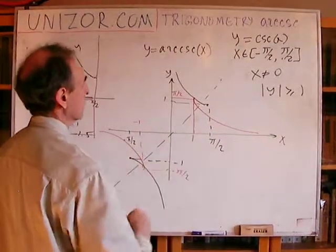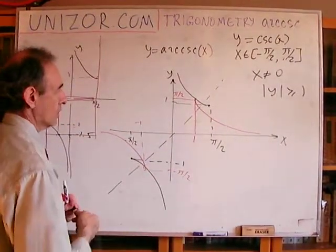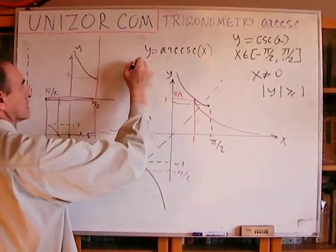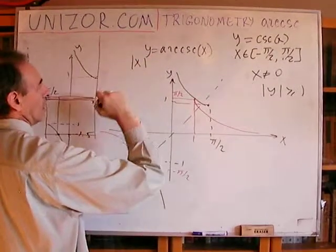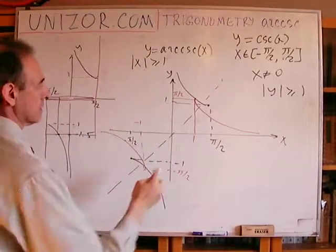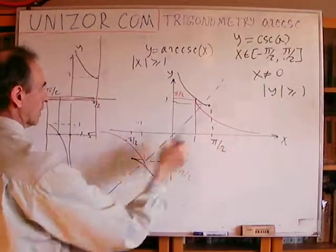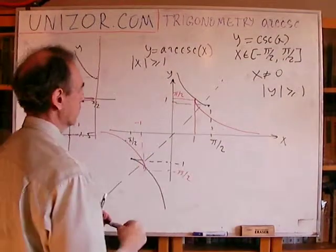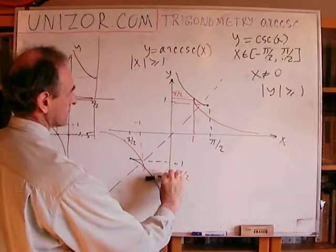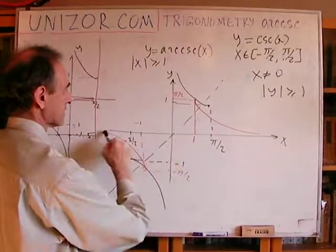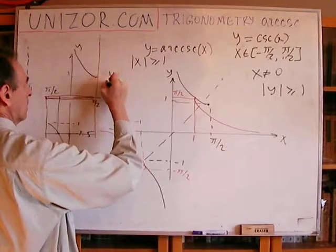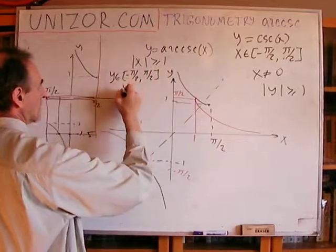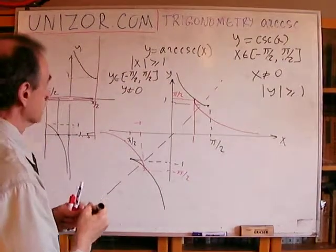The domain of this function is what used to be the range for the cosecant function. So in this case, x, absolute value of x greater or equal to 1. That's the domain. Equal or greater, or equal or less than minus 1. These two areas. Now, the range would be from minus pi over 2 to pi over 2, except 0. So y belongs from minus pi over 2 to pi over 2, except y is not equal to 0. That's the range.